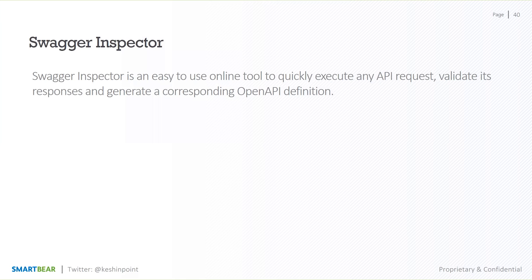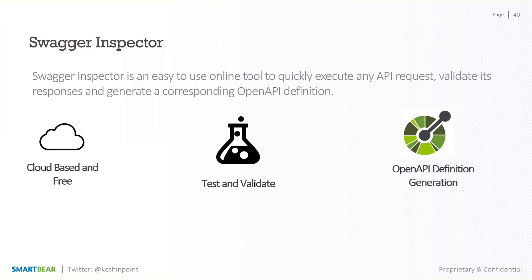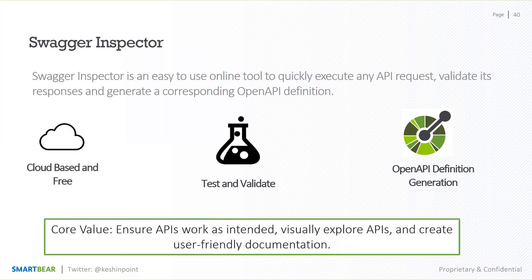It's a quick, easy-to-use online cloud-based tool to validate an API. While you're validating, it generates a corresponding OpenAPI definition. On the cloud itself, you can generate the OpenAPI documentation or definition from existing APIs which don't have a definition in place. The core value is to not just ensure the API works as intended, but to simultaneously generate the definition, which in turn leads to user-friendly documentation.